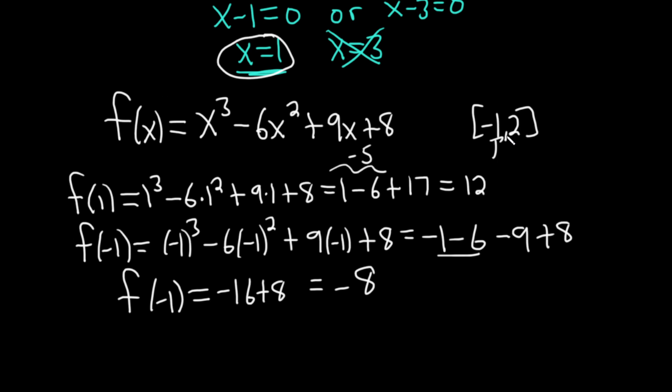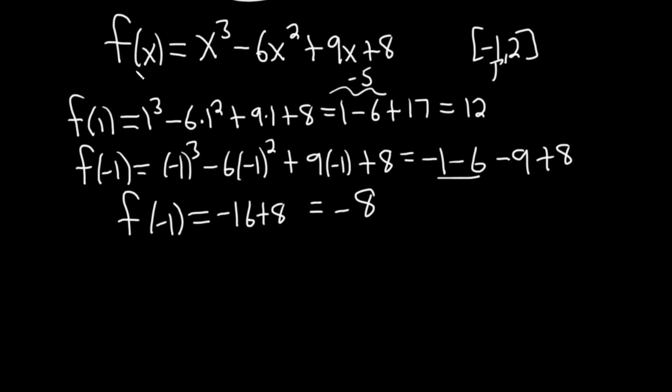And the last one to check is 2. Plugging 2 back into our original function, f(2) = 2³ - 6(2)² + 9(2) + 8, just taking the 2 and putting it everywhere you see an x.